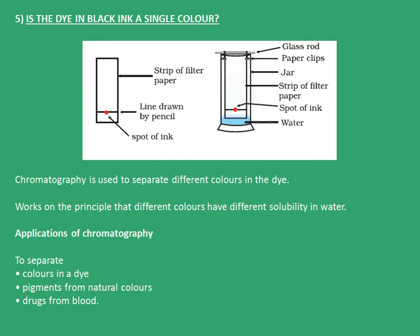The fifth is: how can we check if the dye in black ink is a single color? For this, the technique of chromatography is used. The experimental setup is to take a strip of filter paper and draw a line with a pencil on it, as shown in the figure. A spot of ink is placed on this line. The strip of filter paper is slowly inserted into water until the water reaches just below the pencil line. As the water rises up the filter paper, different colors separate due to their different solubility in water.